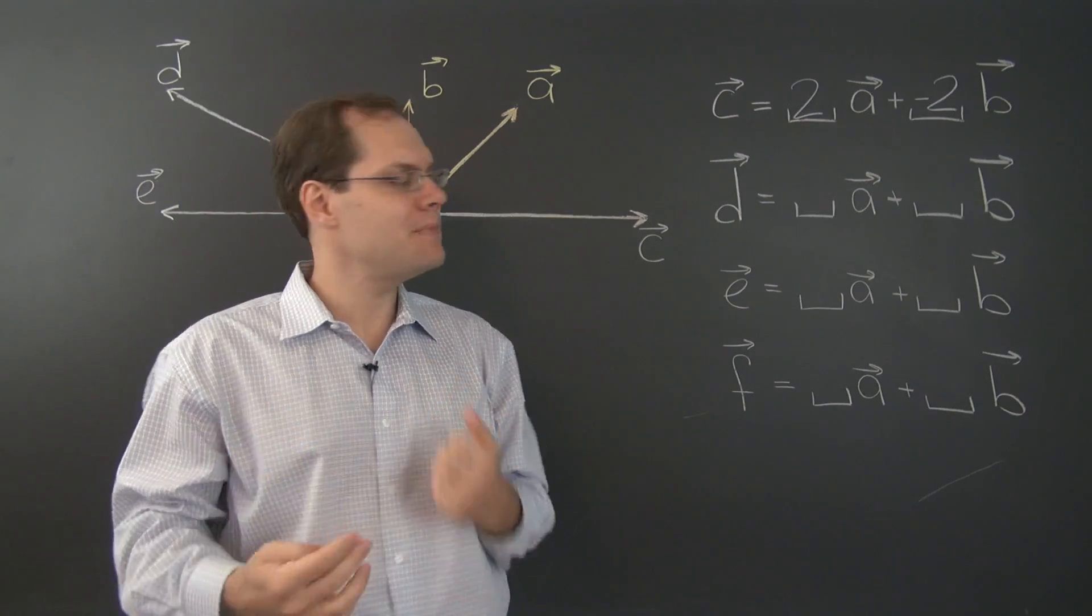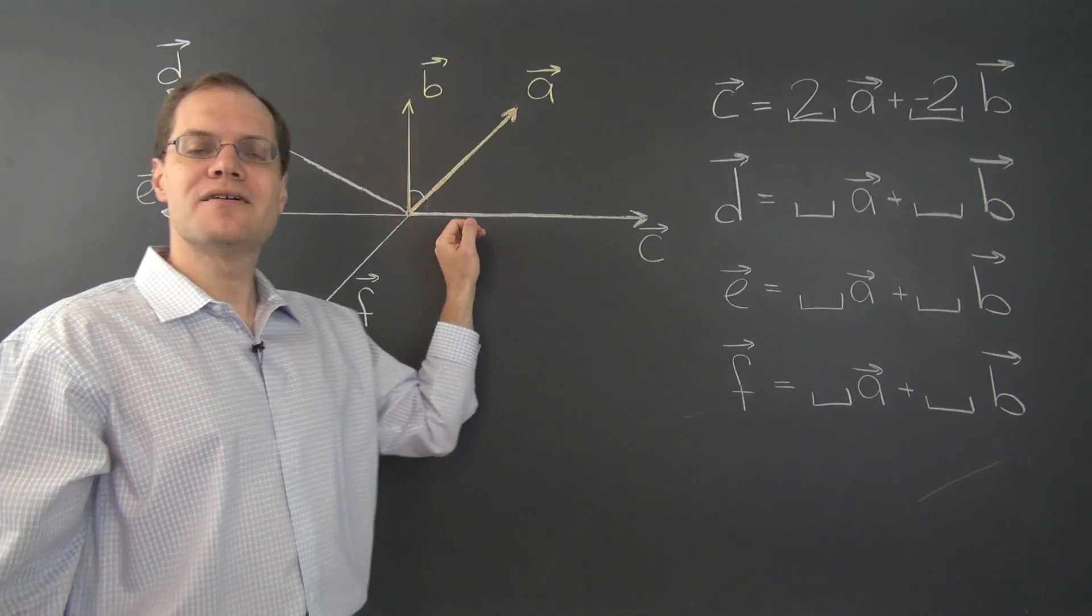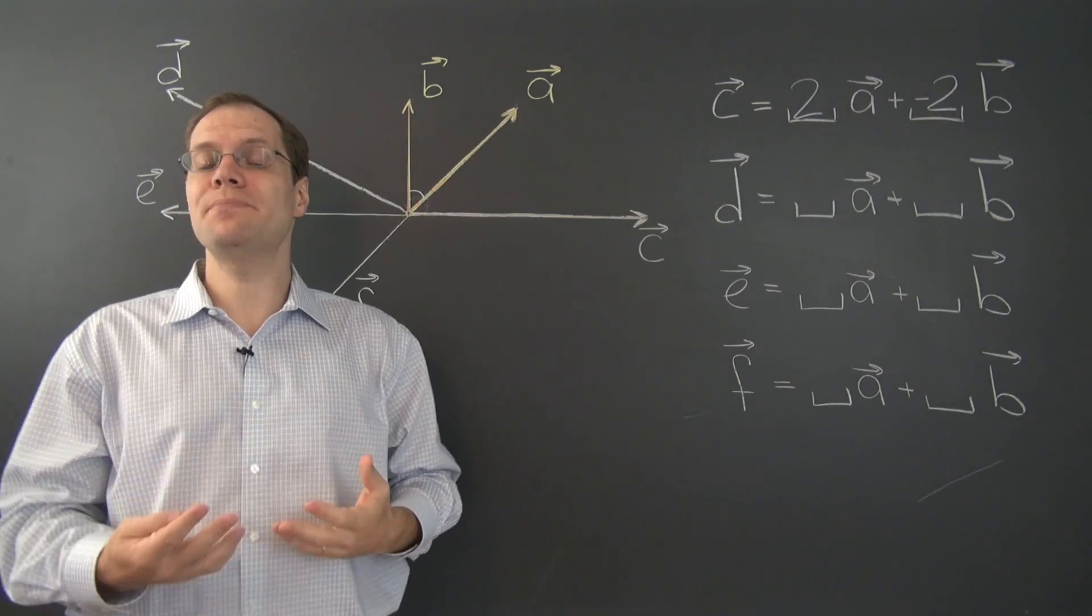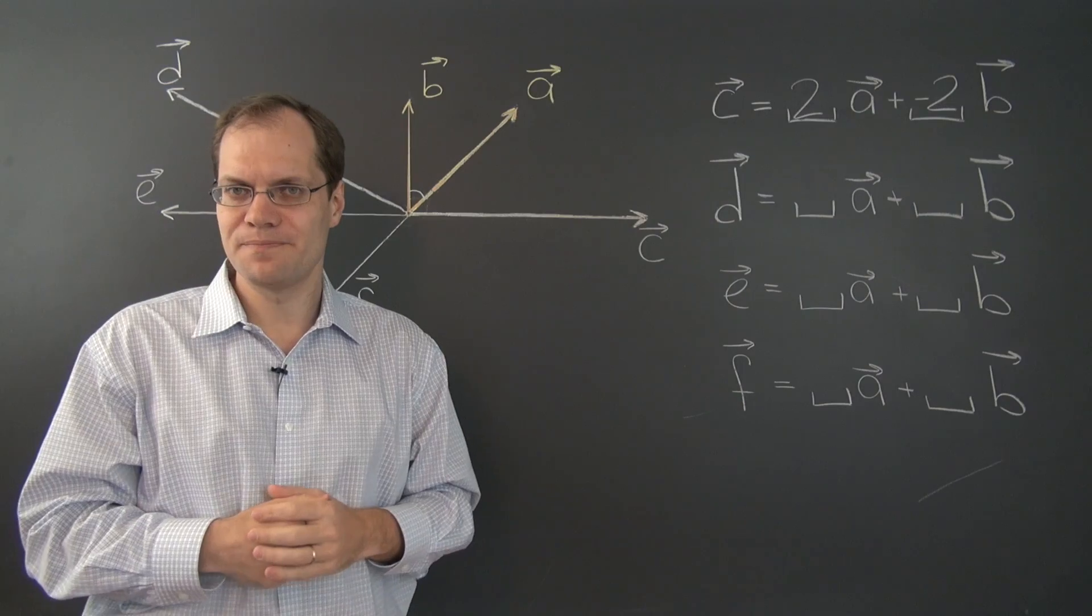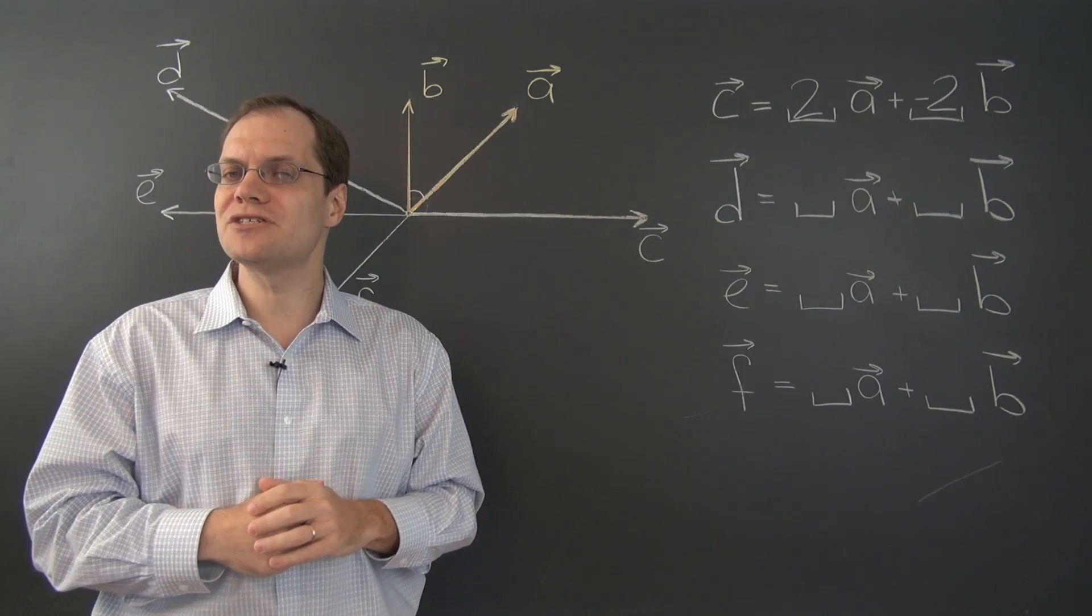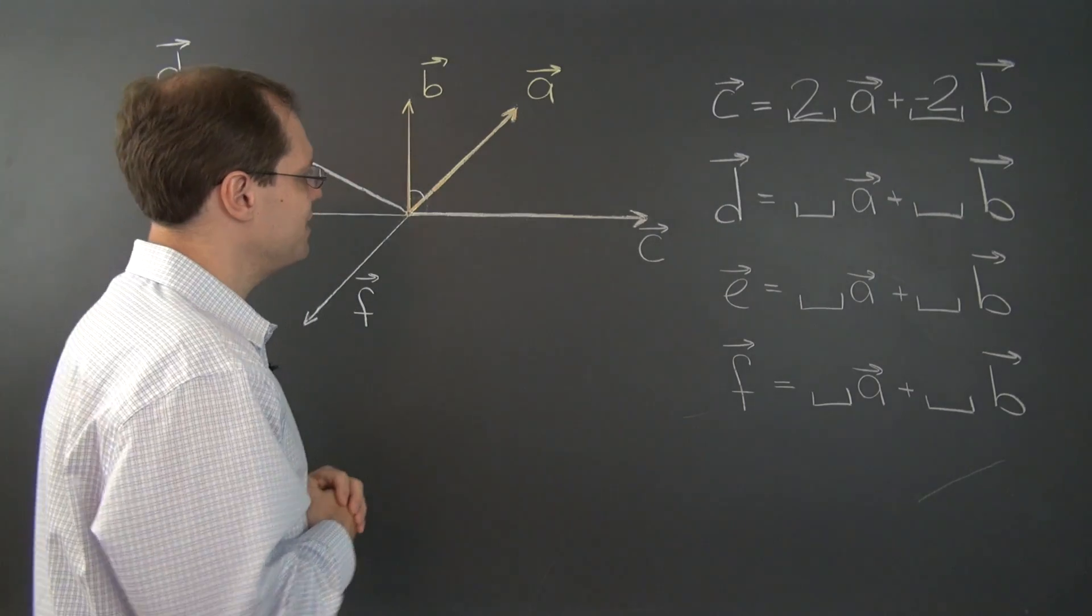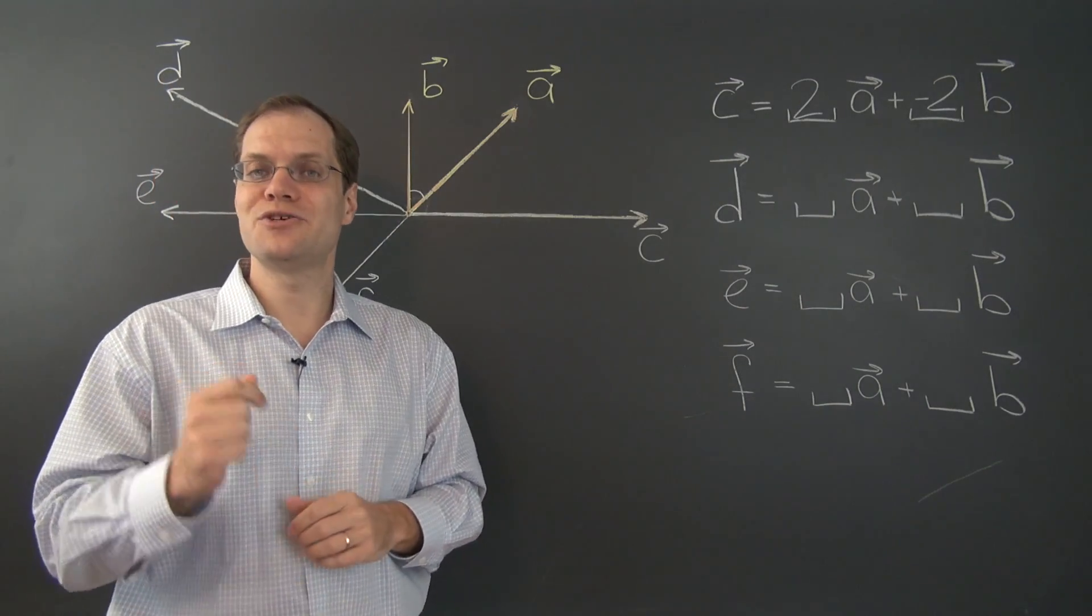And we're done with our first more complicated example. And of course the key remains that these vectors are arranged in a very special way. You might begin to wonder, what am I going to do if they're not arranged in any special way? Well, an answer to that question is coming in just a couple of videos.